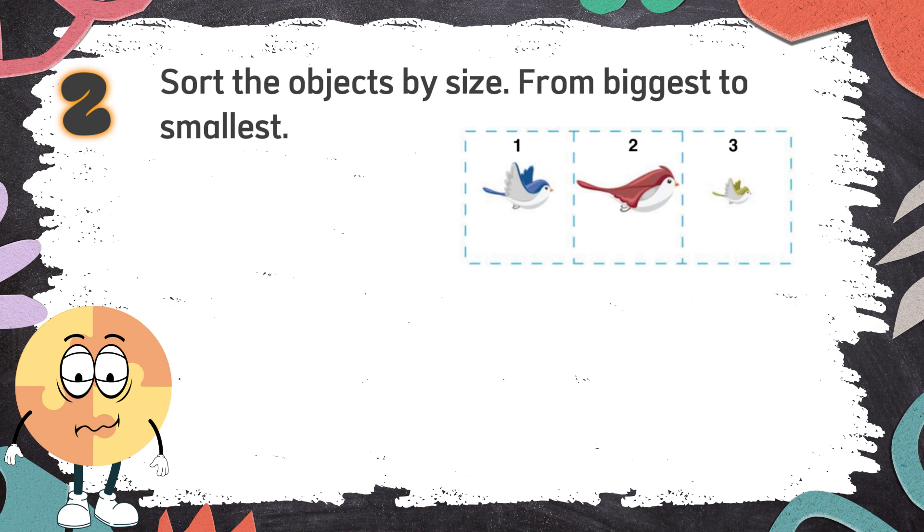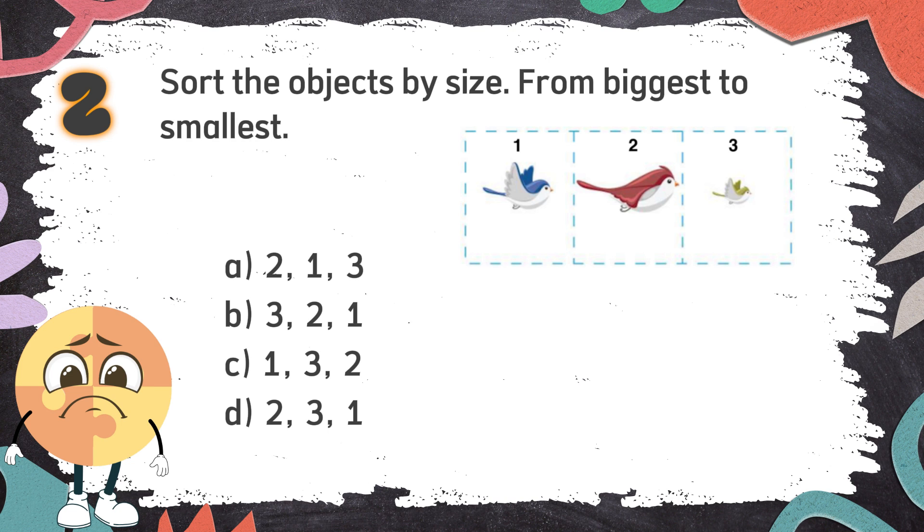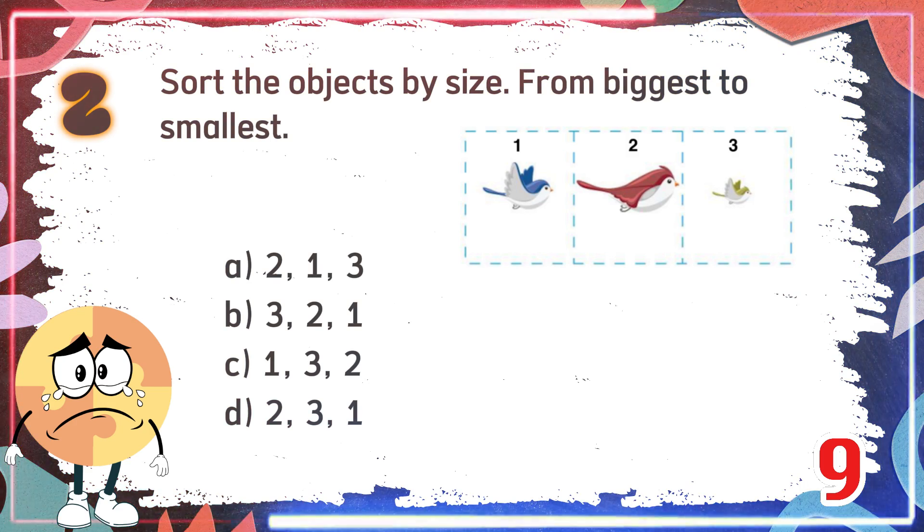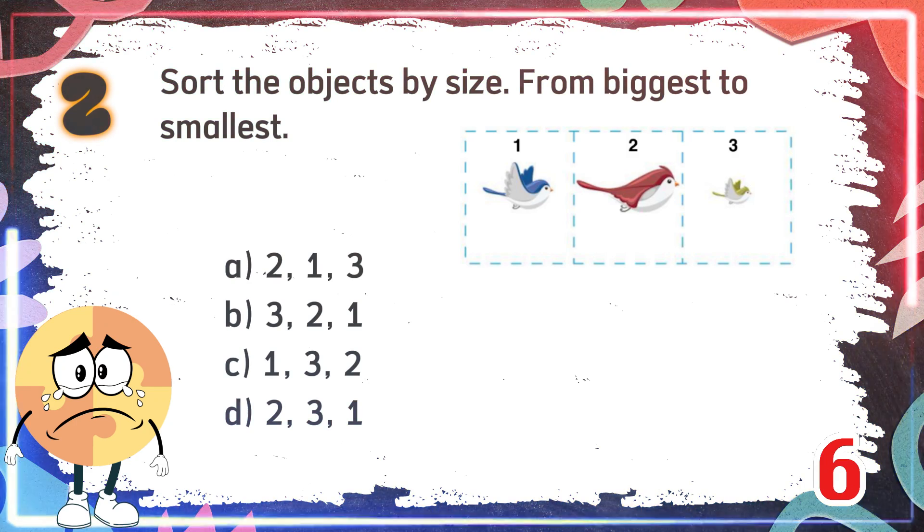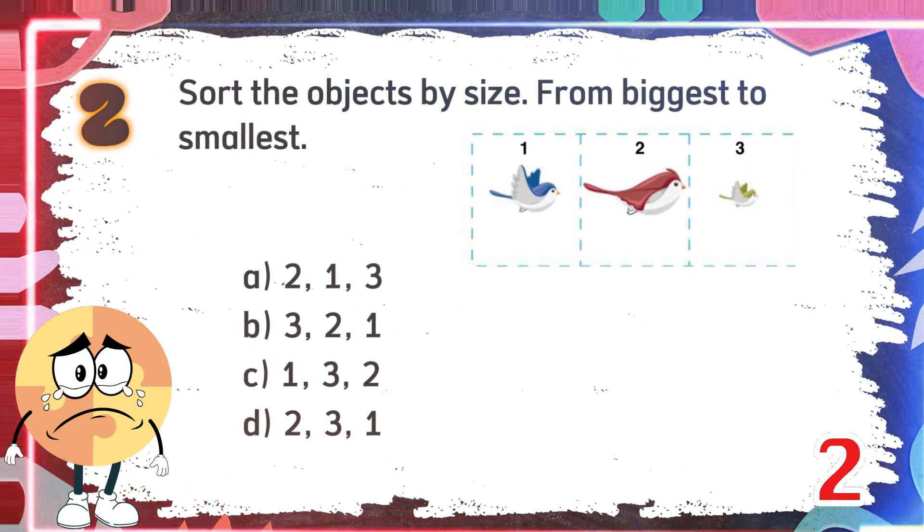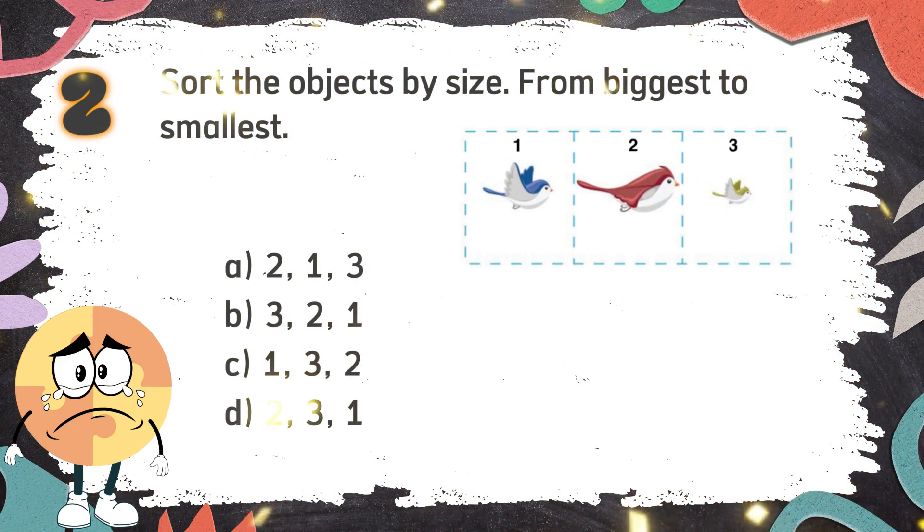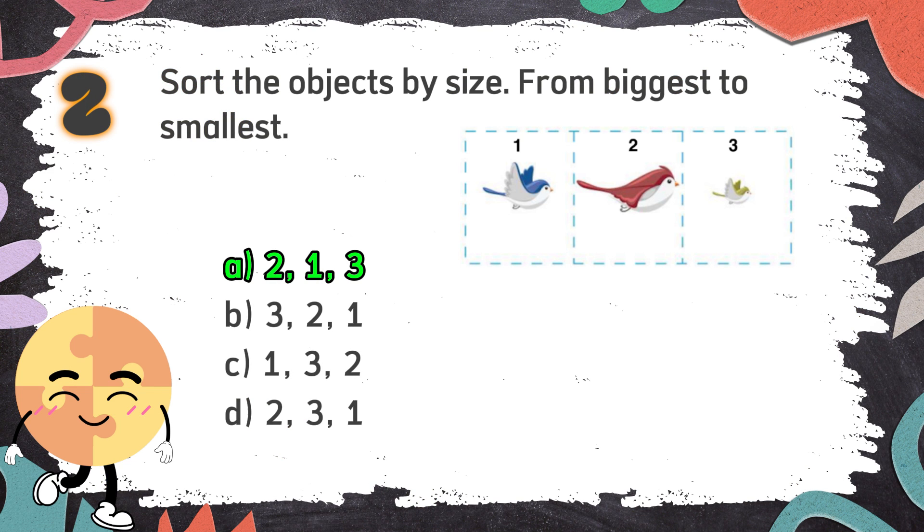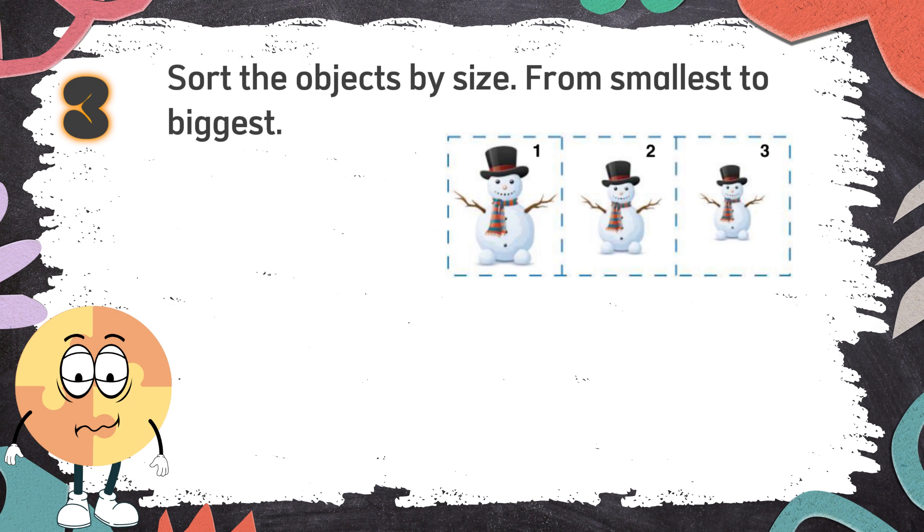Number 2: Sort the objects by size from biggest to smallest. The choices are A, 2 1 3, B, 3 2 1, C, 1 3 2, D, 2 3 1. The correct answer is A, 2 1 3.